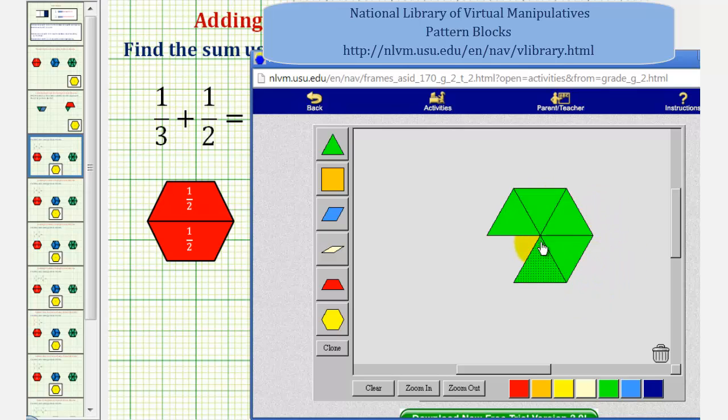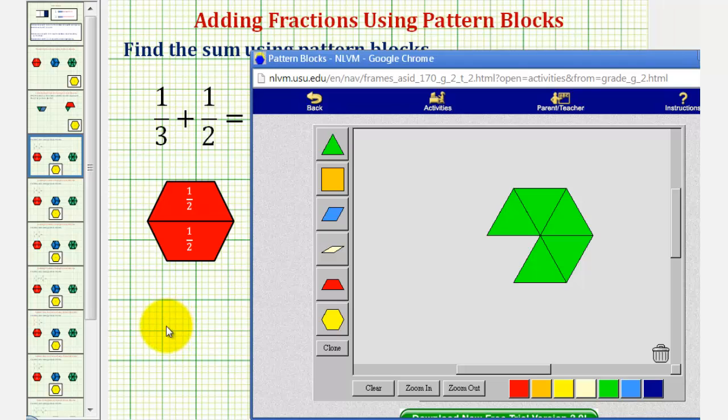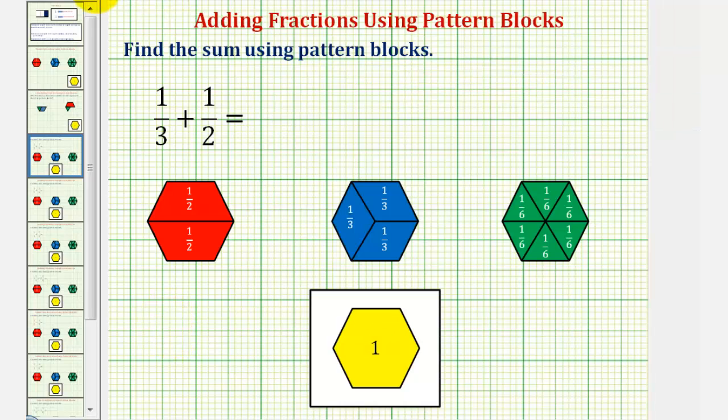So now if we count or enumerate the green pattern blocks, we have one, two, three, four, or five green pattern blocks. Each green pattern block is equal to one-sixth, so our sum is five-sixths. One-third plus one-half equals five-sixths.